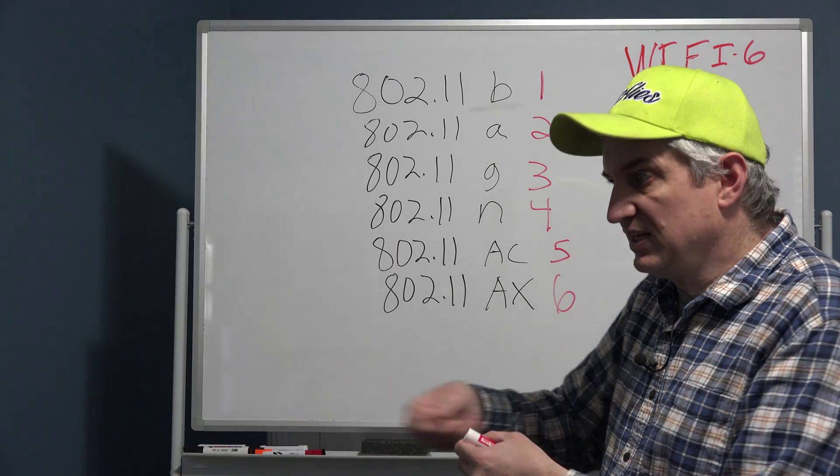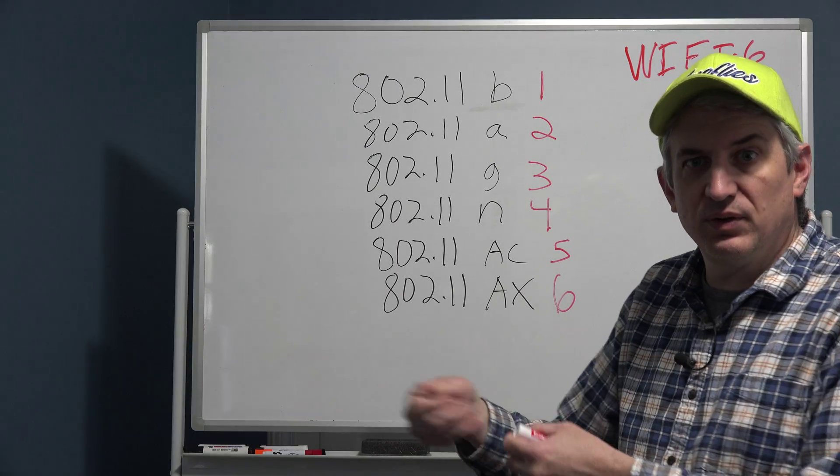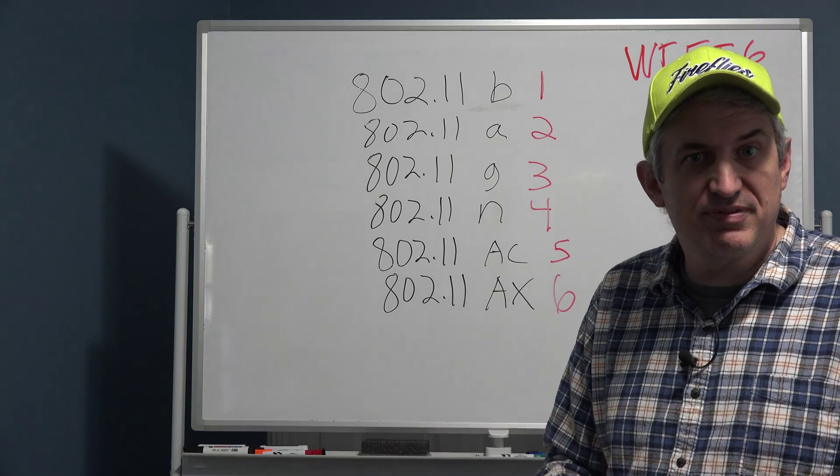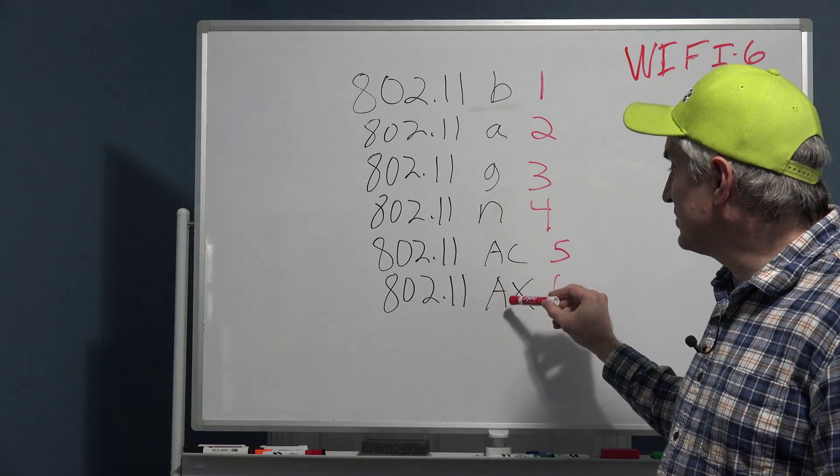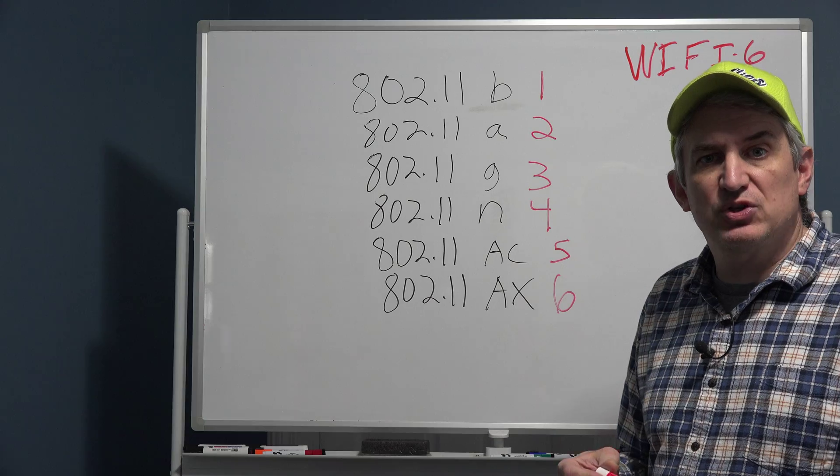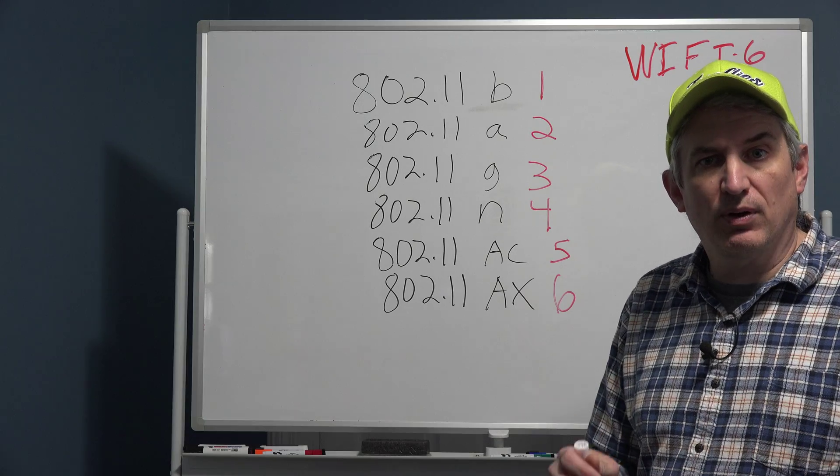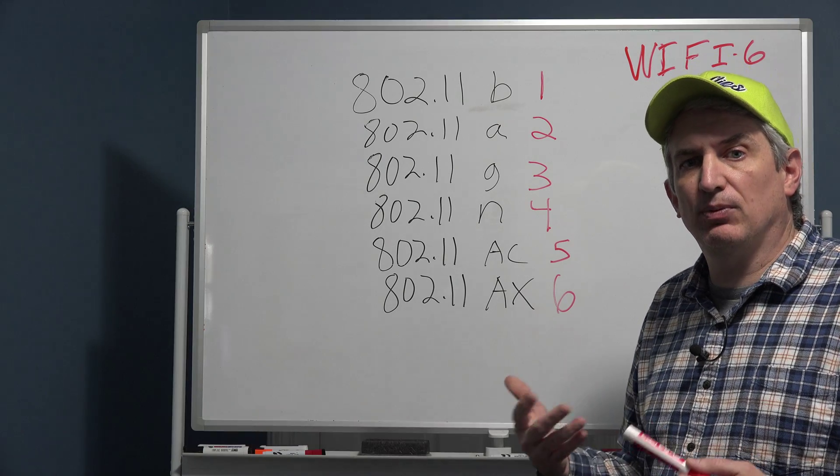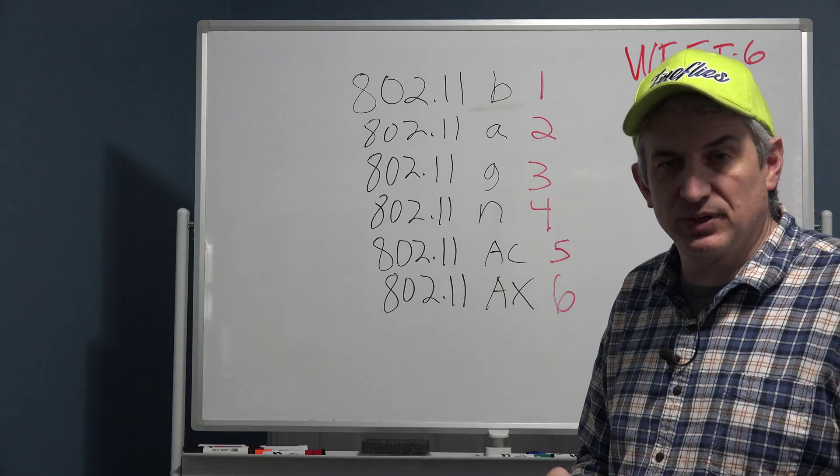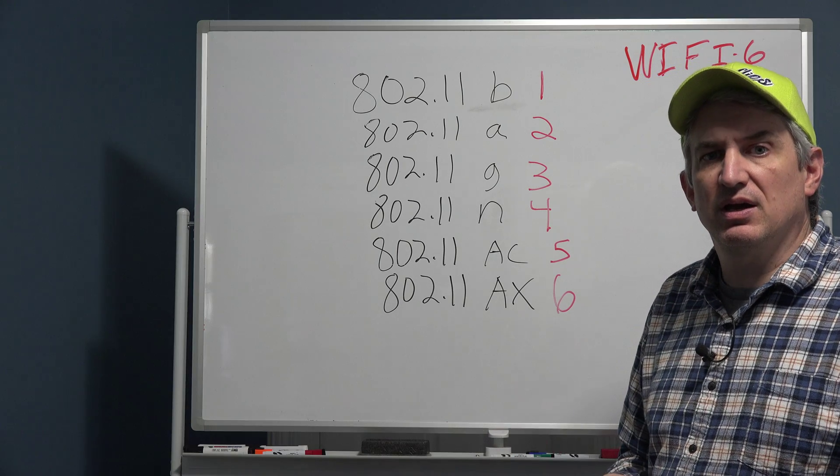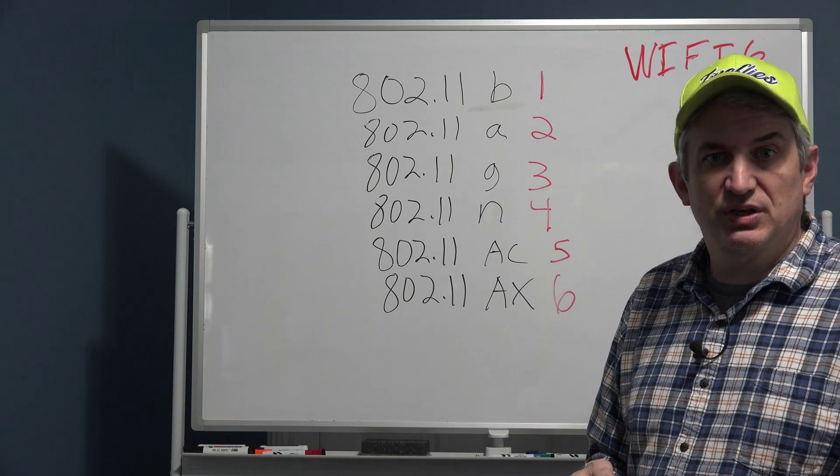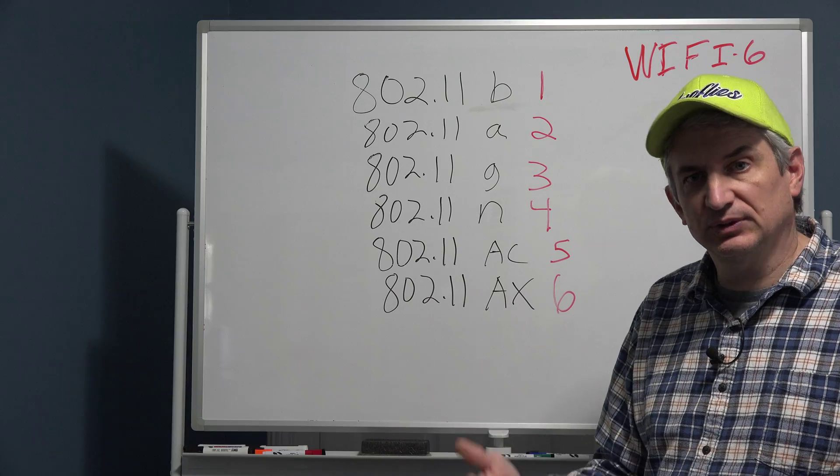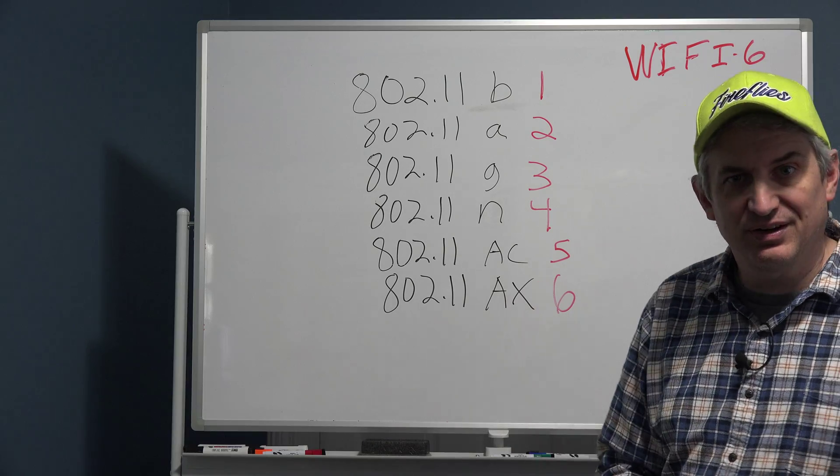WiFi 6 is going to allow the routers to be able to send in one broadcast multiple packets to multiple devices, and will enable much more efficient communication between devices when there's a heavily congested network. And of course it's faster. All of these as you go down the stack are faster.